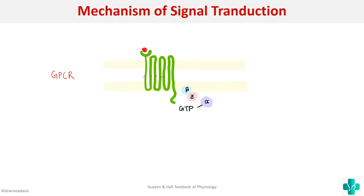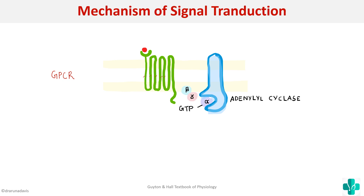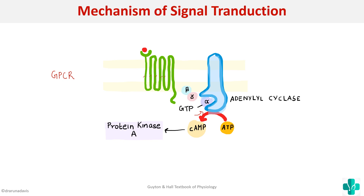When a hormone binds onto the G protein coupled receptor, the alpha subunit of the G protein will go and bind to the enzyme adenylyl cyclase. When the G protein binds onto adenylyl cyclase, the adenylyl cyclase will convert ATP to form cyclic AMP. The cyclic AMP will then activate protein kinase A, which in turn causes phosphorylation of various proteins present in the cell, thus producing the cellular response.